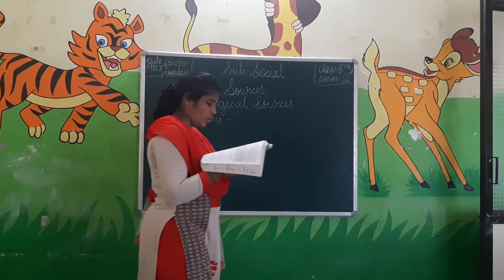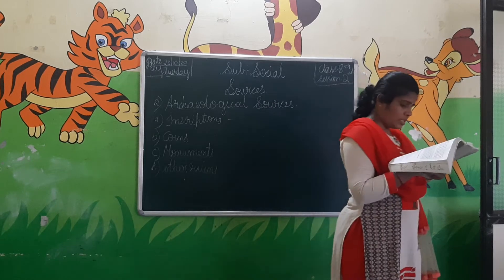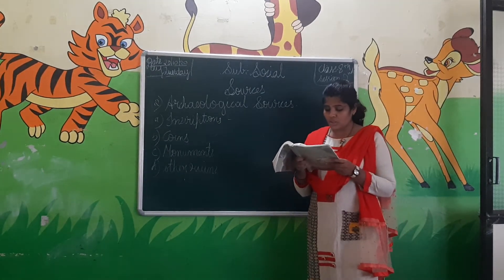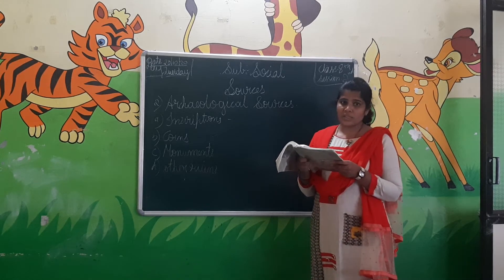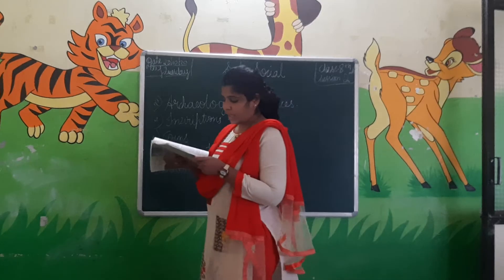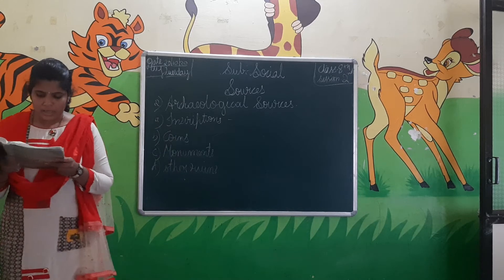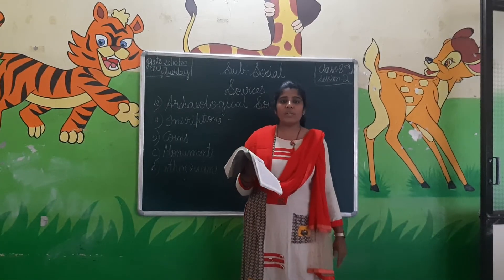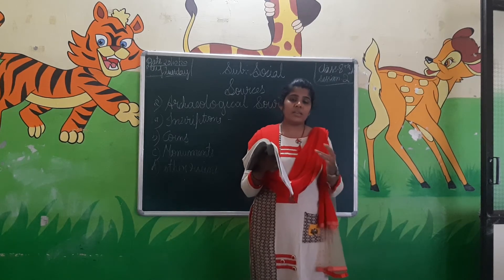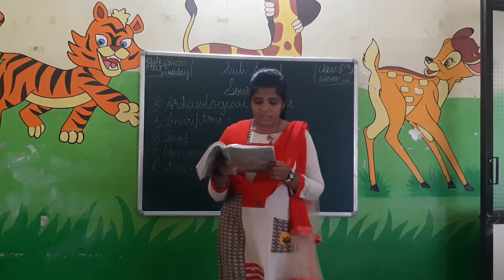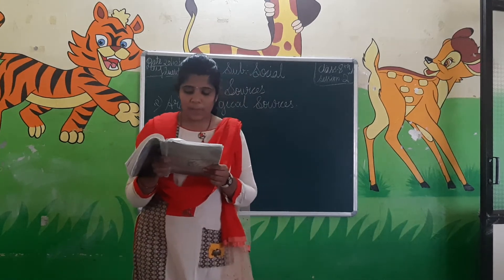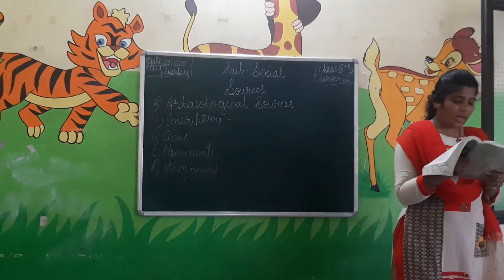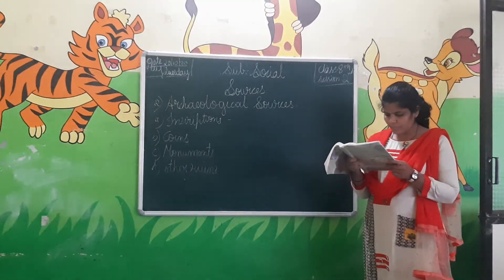Shah Jahan's Taj Mahal tells the story of love. Vijay Stambha means victory pillar and tells of the victory of Rana Kumbha. The cave pictures and engravings of Elephanta, Ellora and Ajanta narrate the mastery over painting and sculpture during their time. The temples of Aihole and Pattadakal explain the evolution of Indian temple architecture.